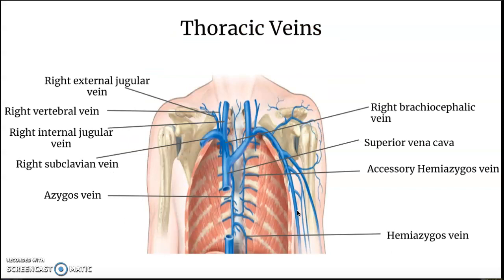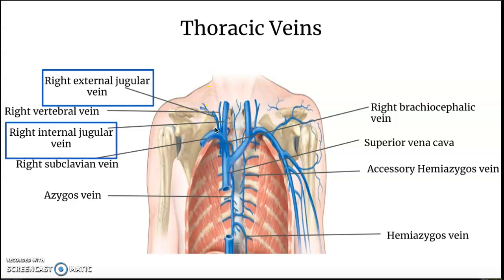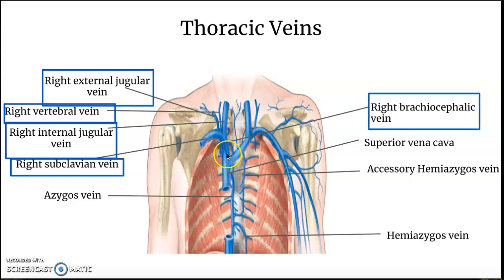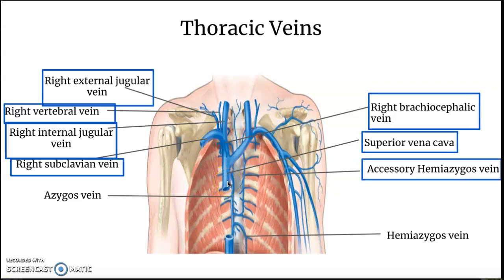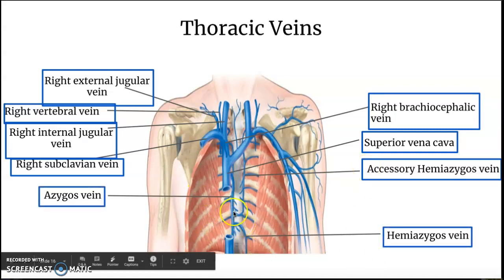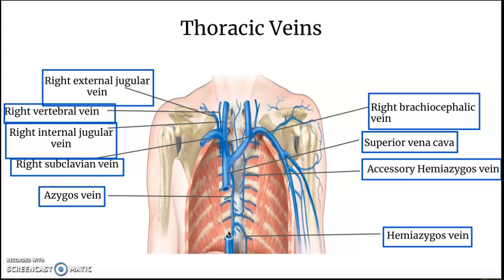Getting into veins now, starting again with the thoracic veins. We have the right external jugular vein, the right internal jugular vein, and the right vertebral vein. All of these merge into the right subclavian vein — veins drain the tissue, so it's almost backwards from how we think about arteries. The right subclavian vein merges into the right brachiocephalic vein and eventually the superior vena cava to dump into the right atrium. We should also note the accessory hemiazygos vein, hemiazygos vein, and the azygos vein — these are all part of the azygos system.